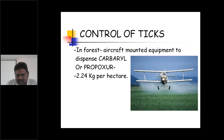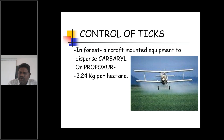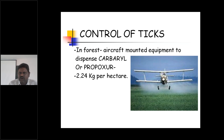To control the tick population, we spray the insecticide — carbaryl or propoxur at 2.24 kg per hectare. By efficiently controlling the tick population, we can reduce the incidence of KFD disease.